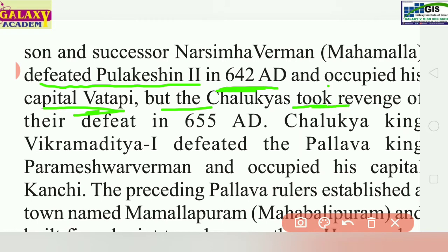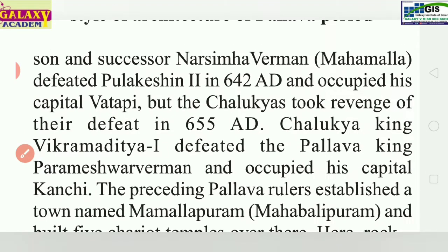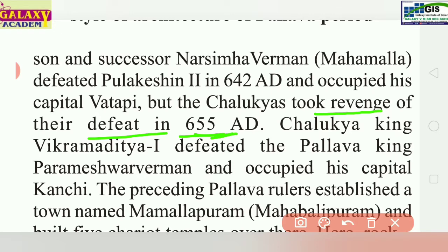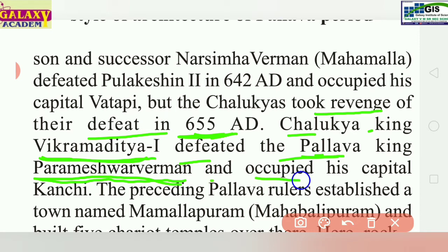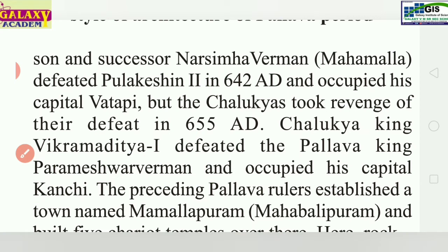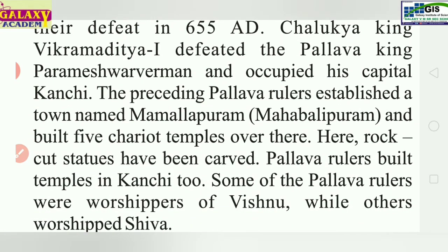But the Chalukyas took revenge. In 655 AD, Chalukya king Vikramaditya I defeated the Pallava king Paramesharavarman and occupied his capital Kanchi. The growing Pallava rulers then established a town called Mahamallapuram, also known as Mahabalipuram.